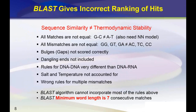Furthermore, BLAST uses an incorrect model for bulges — correct for gaps in a splint alignment, but incorrect for complementarity with bulges. Additionally, BLAST does not include the effects of dangling ends, different sequence types such as DNA versus RNA hybridization, salt and temperature effects, or multiple mismatches — all considerations that compromise BLAST's scoring for cross-hybridization detection.